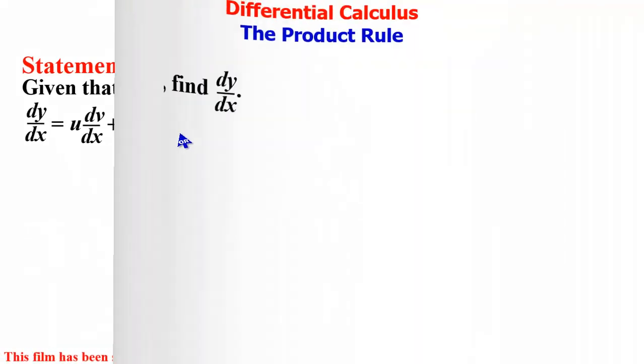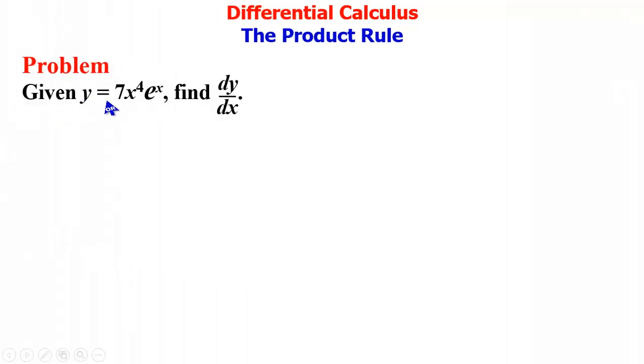So we have a problem here. Given y equals 7x raised to the power 4 e raised to the power x, find dy/dx.